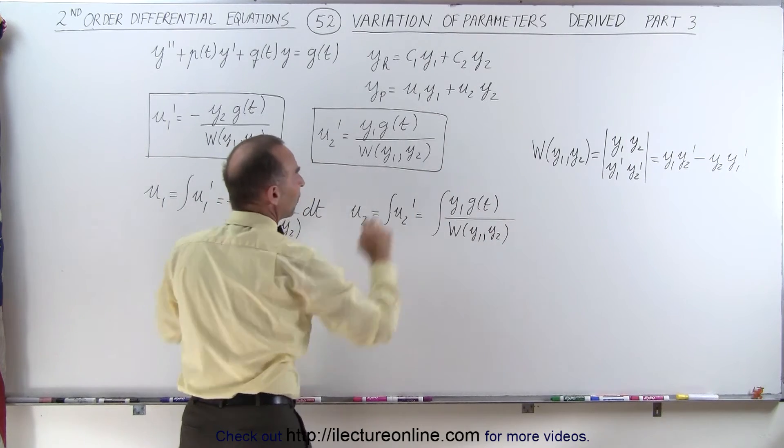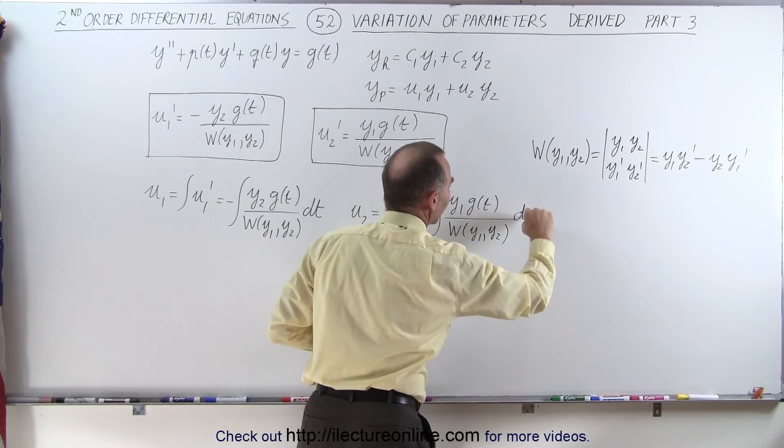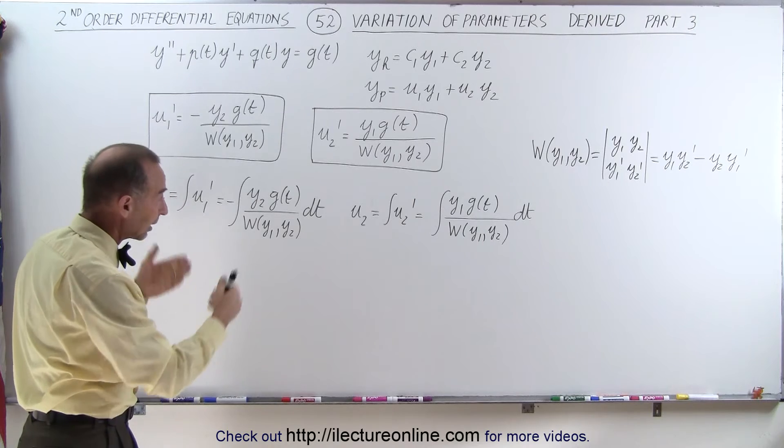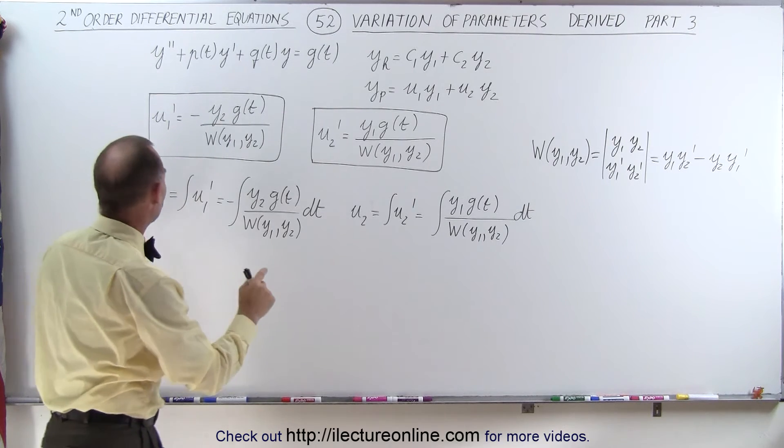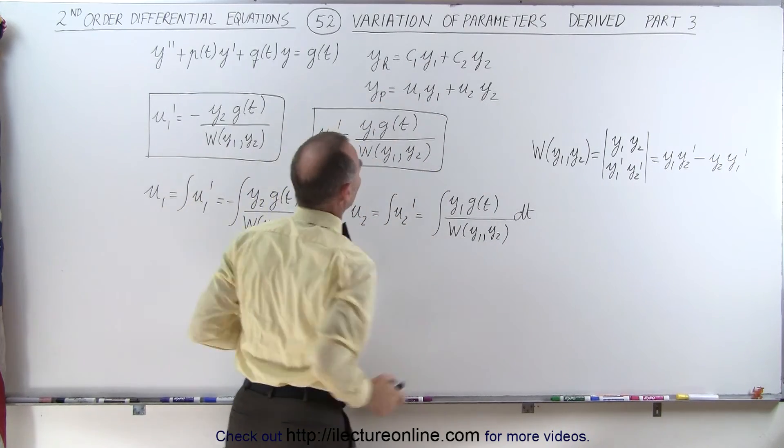We then simplify those fractions and integrate them, if possible. I can't forget the dt on that side, otherwise we can't integrate. Like I said, we'll show you some examples of that. But that will allow us to find u1 and u2, which will be part of our particular solution.